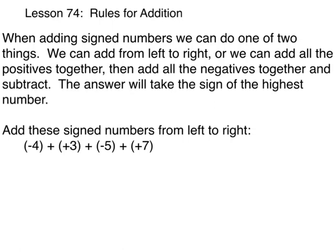In this lesson, I'm going to tell you there are a couple of different ways that we can add positive and negative numbers. We can either add from left to right, which is the way your book is teaching you in this lesson, or we can add all the positives together, then add all the negatives together and subtract. The answer will take the sign of the highest number.